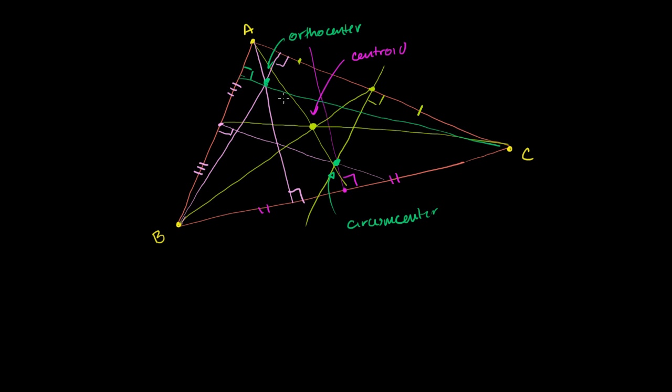Now the whole reason why I'm doing this, and this is frankly kind of a mind-boggling idea, it's neat enough that each of these points even exist. That three altitudes will intersect in one point, that the three medians intersect in one point and they have all these neat properties, and that the three perpendicular bisectors intersect in one point. That by itself is neat enough.